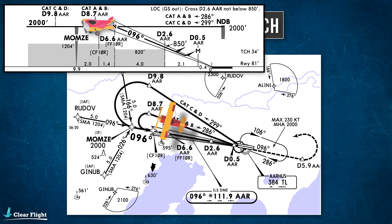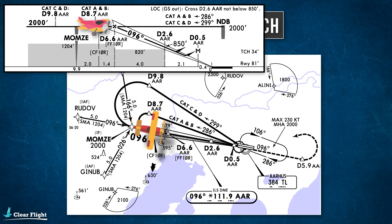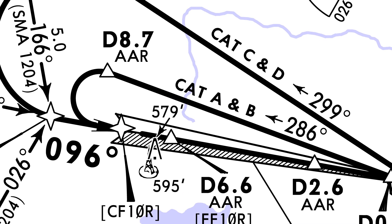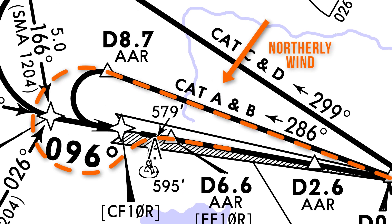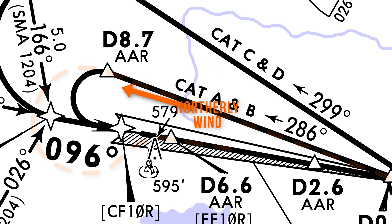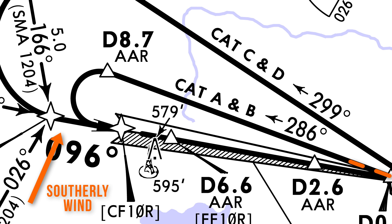Once you've reached a DME distance of 8.7 from the Alpha Alpha Romeo, you'll commence a left turn to intercept the ILS. This turn will never perfectly look the way it does on the plate. If you've got a strong wind from the north, your turn may become even bigger than what's drawn on the plate, and you would need to continue the turn to intercept the ILS from the other side. On the other hand, if you had a strong wind from the south, you'd expect this turn would be tiny, and you'd need to roll wings level before finishing the turn and fly an intercept heading to get yourself onto the approach.